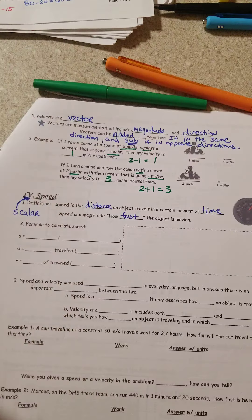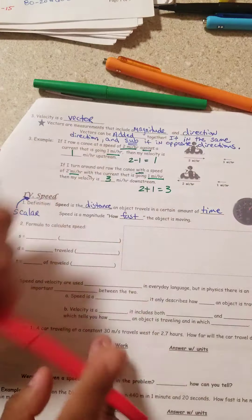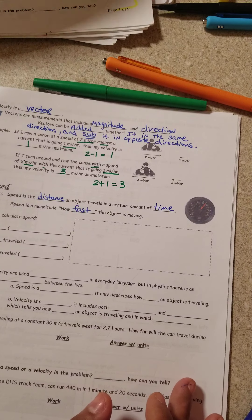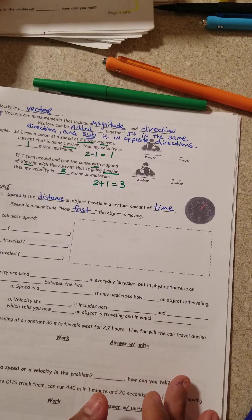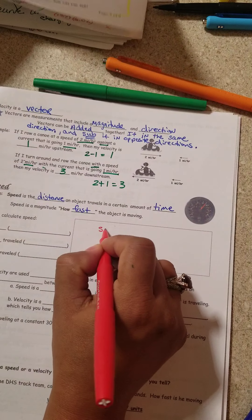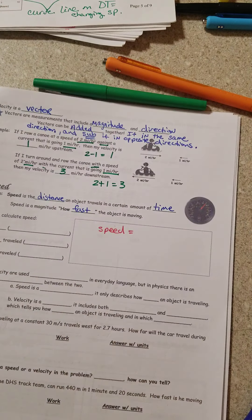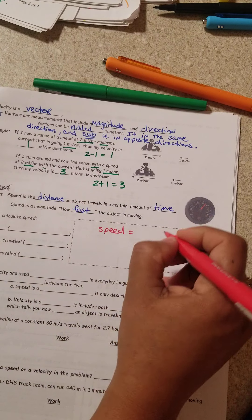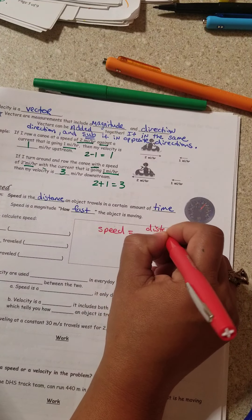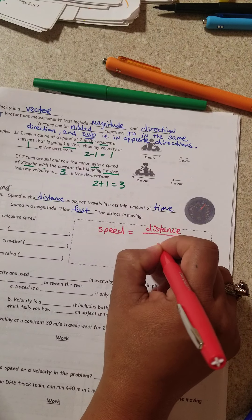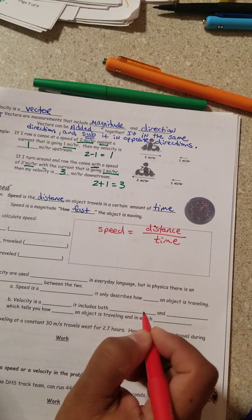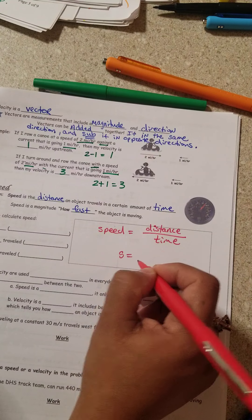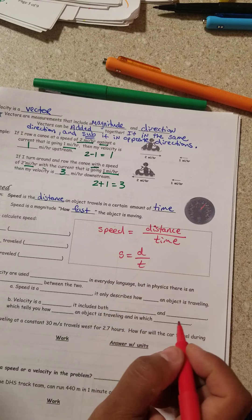So let's go ahead and look at the equation before I go any further. For speed. Speed's equation is distance over time.